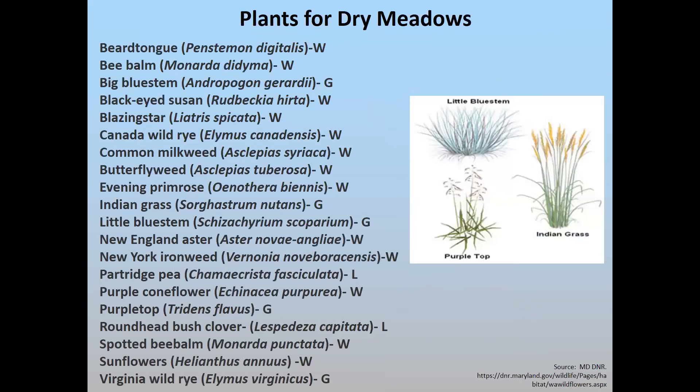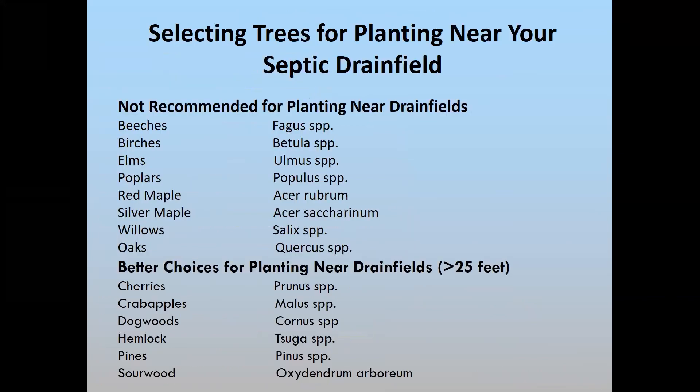This is from the Maryland DNR site showing an example of dry meadows. For example, if you have a sand mound, these might be some species of plants to consider. As for selecting trees, you can see from the list that some are not recommended anywhere near the drain field because of the invasiveness of their roots — roots will travel long distances and grow fast, penetrating gravel trenches, getting into the pipe, and actually clogging the pipe, which would create a failing drain field.